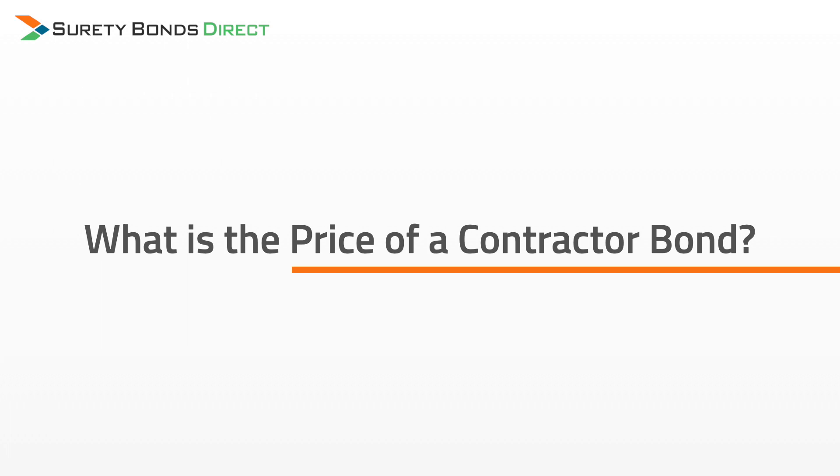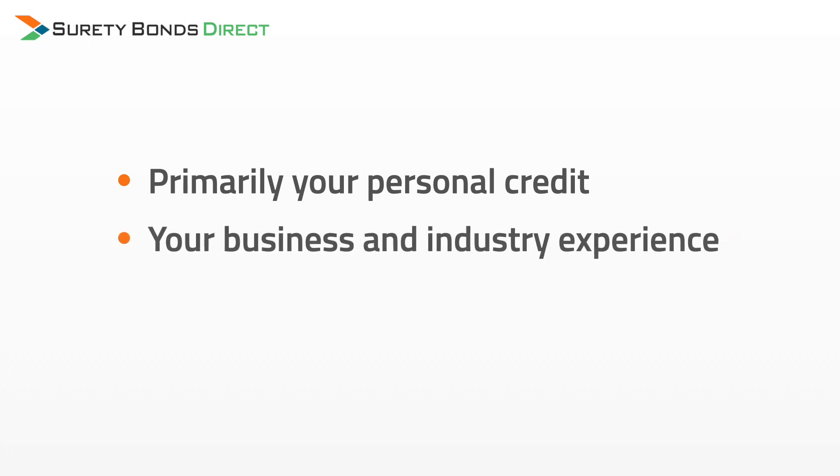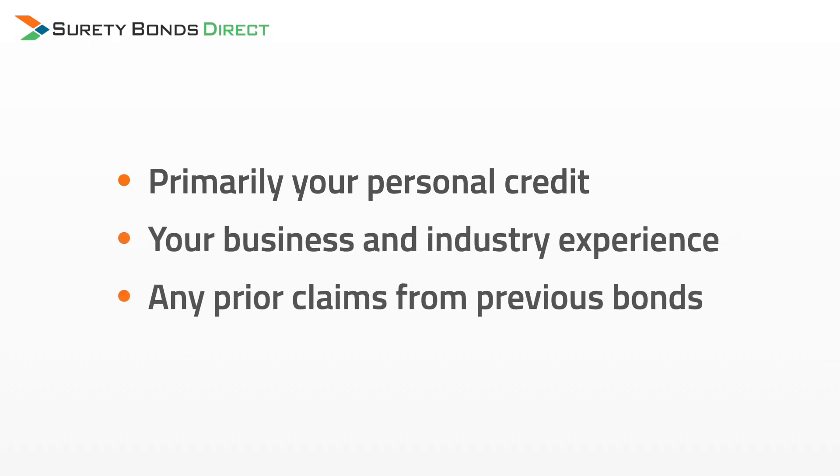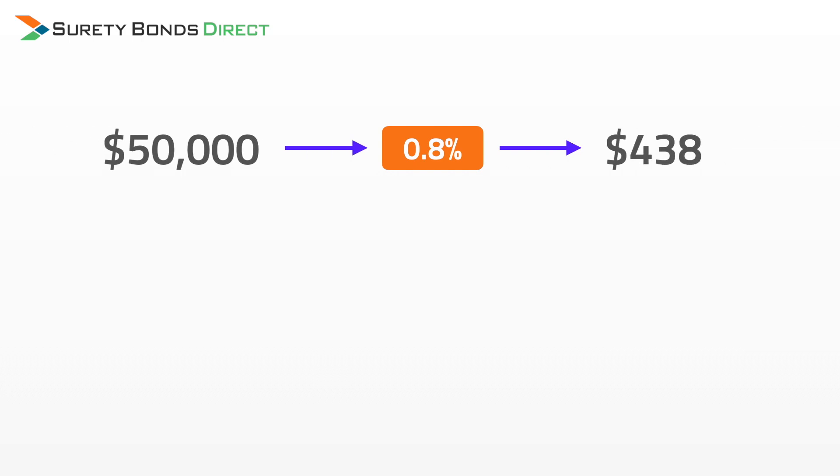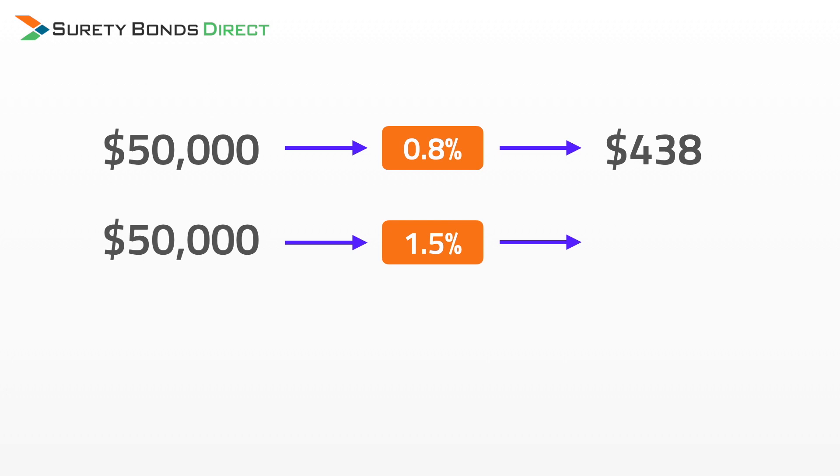The $50,000 is the bond amount — this is not the cost. The price is determined by the surety, the insurance company who writes the bond, and they look at factors such as your personal credit, your business and industry experience, and any prior claims from previous bonds. From these factors, the surety determines a rate, and that rate multiplied by the $50,000 bond amount is your cost. For example, a low rate of 0.8% means you'll pay $438; a 1.5% rate will cost you $750; and a 3% rate will cost you $1,500.